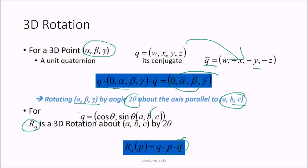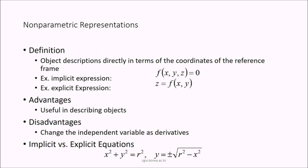In non-parametric representation, object descriptions are given directly in terms of the coordinate reference frame. Implicit expression: f(x,y,z) = 0; explicit expression: z = f(x,y). The advantage is usefulness in describing objects, but the disadvantage is that changes in independent variables affect derivatives. For example, implicit: x²+y² = z²; explicit: y = √(r²−x²).